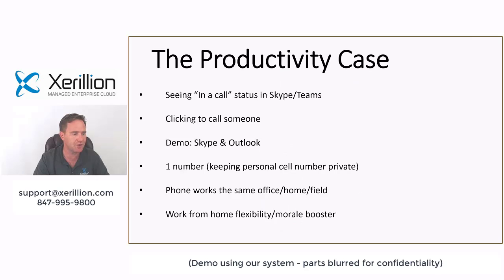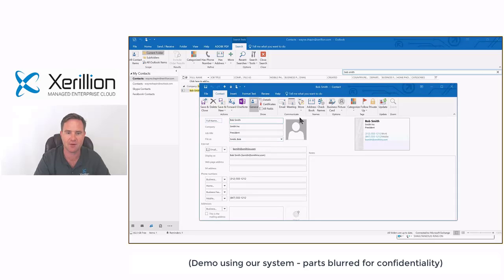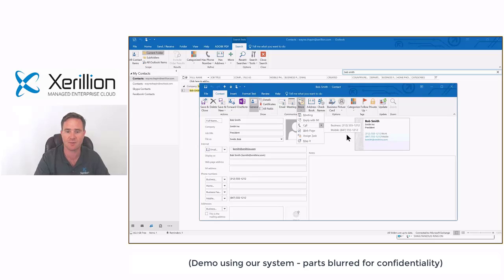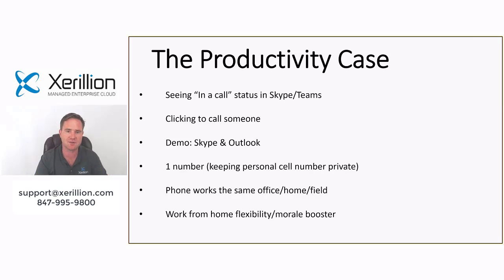One other thing I want to show is using Outlook in context. I bring up Bob Smith, click more, click call, and then I can choose which phone number I want to call. That's fully integrated — once you turn on the Microsoft phone system, it will just start working. That's a demo of how you use Skype for Business, Outlook, and Teams — both desktop and mobile apps — and how you integrate with those.